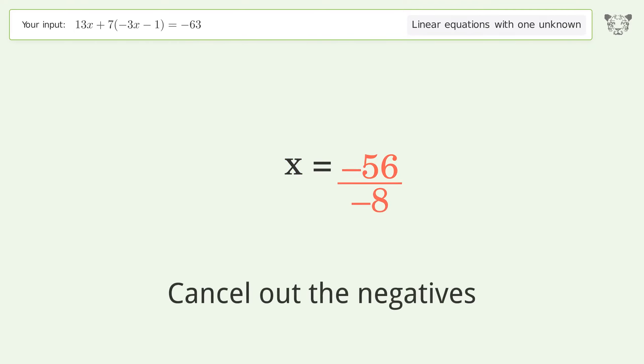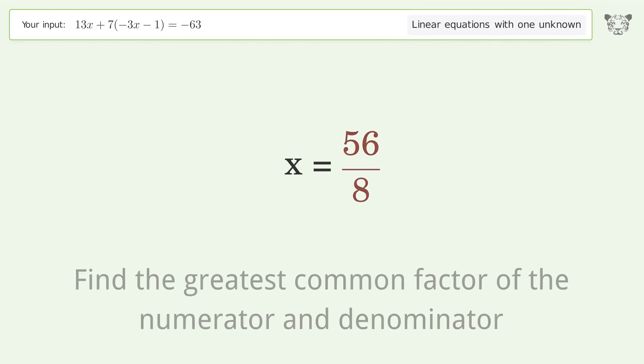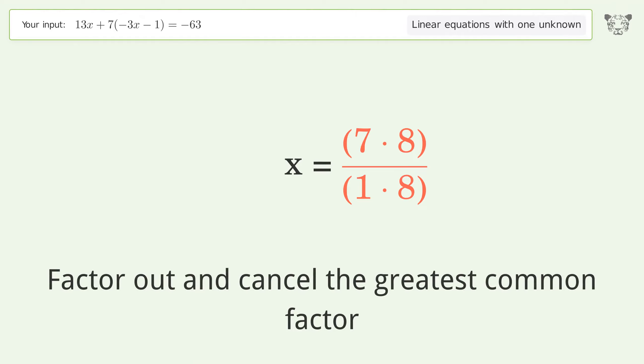Cancel out the negatives. Find the greatest common factor of the numerator and denominator. Factor out and cancel the greatest common factor.